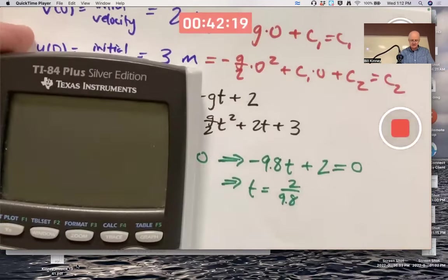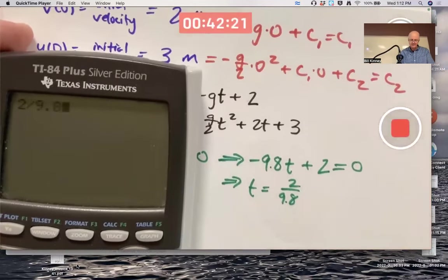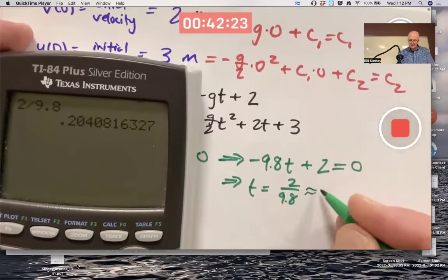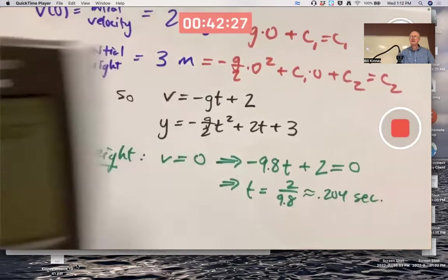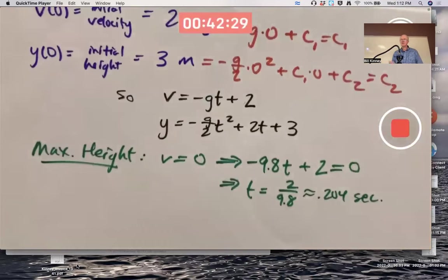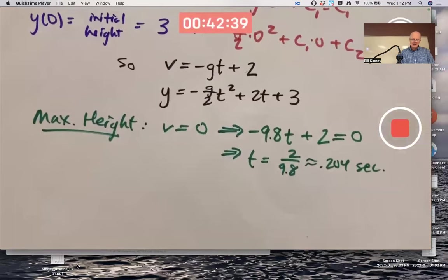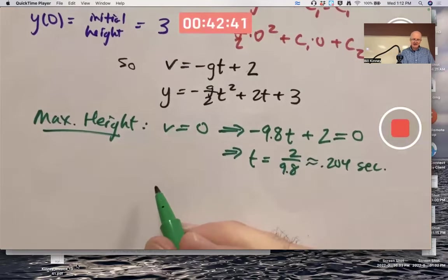Set velocity equal to zero and solve for T. Let's go ahead and use G equals 9.8 so we're near the surface of the earth. You'll get T is 2 over 9.8, which simplifies to about 0.204 seconds. Is the time when the maximum height is reached. Which is very fast. About that fast. That's about 0.2 seconds between my snaps.